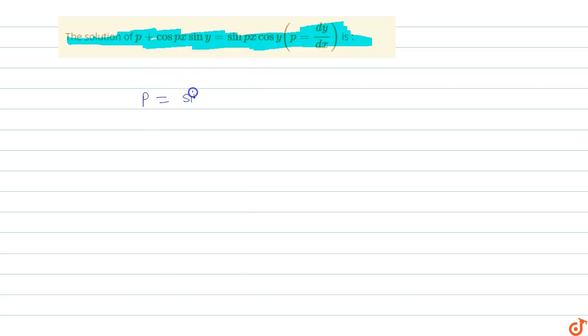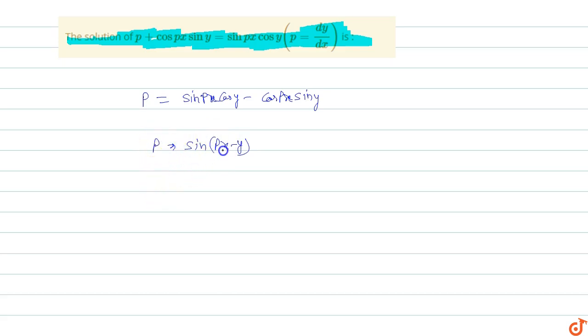To find the solution of this differential equation, we rearrange to get p = sin(px)·cos(y) − cos(px)·sin(y). This is the formula for sin(px − y), which equals p. So px − y = sin⁻¹(p), and since p is a constant, we let p equal c.